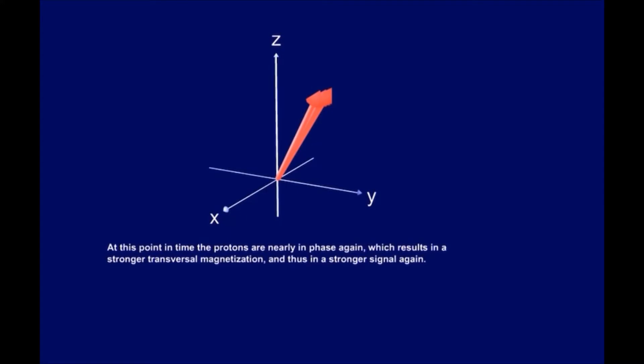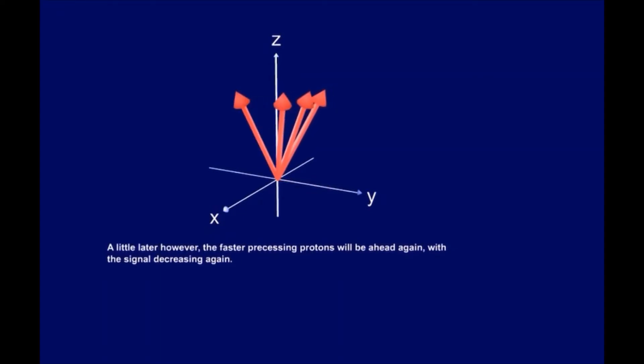At this point in time, the protons are nearly in phase again, which results in a stronger transversal magnetization and thus in a stronger signal again. A little later, however, the faster precessing protons will be ahead again, with the signal decreasing again.